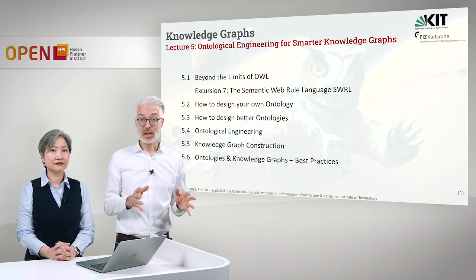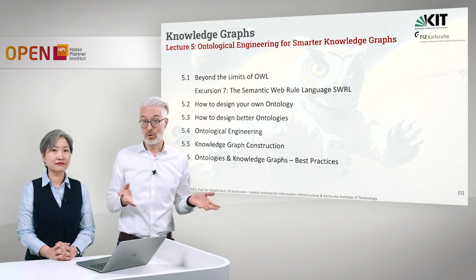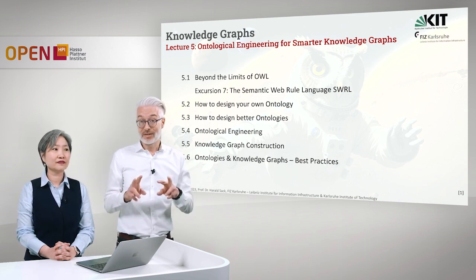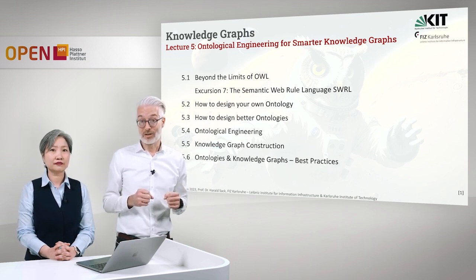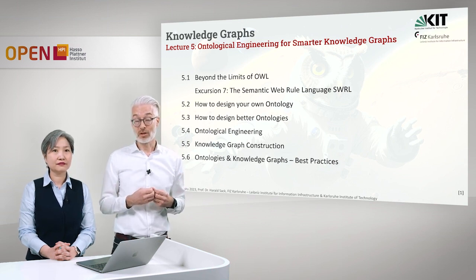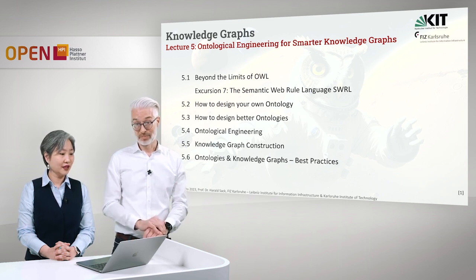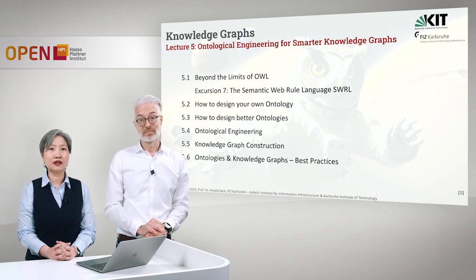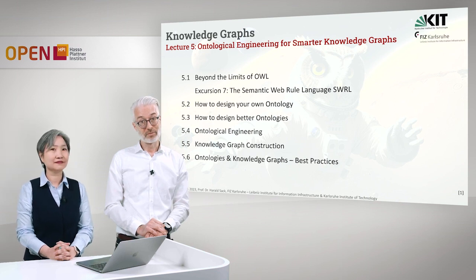Finally, after we have created a good ontology, what's missing is data — or rather knowledge. So we have to populate the ontology, and this is knowledge graph construction, which we are dealing with in chapter 5.5. To summarize, in section 5.6 we will tell you the best practices in ontological engineering — something practical for your daily life.